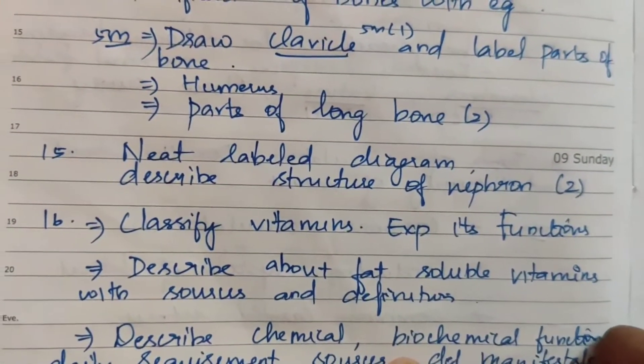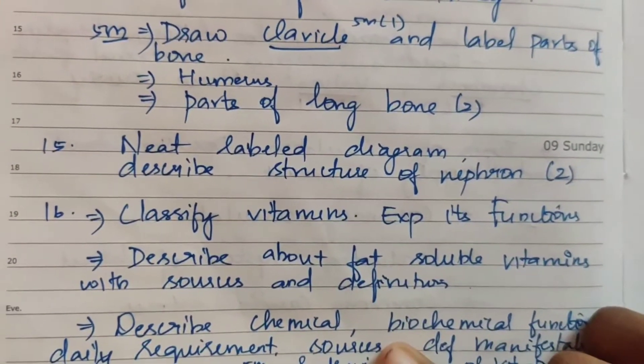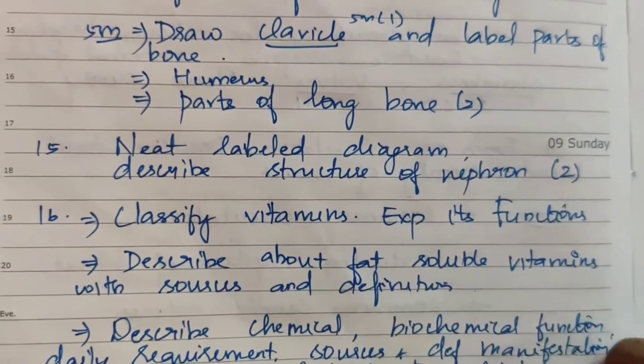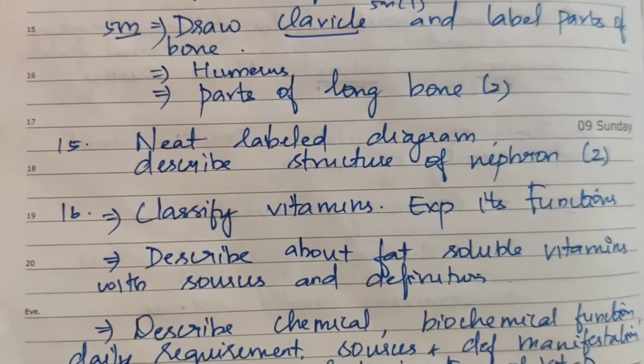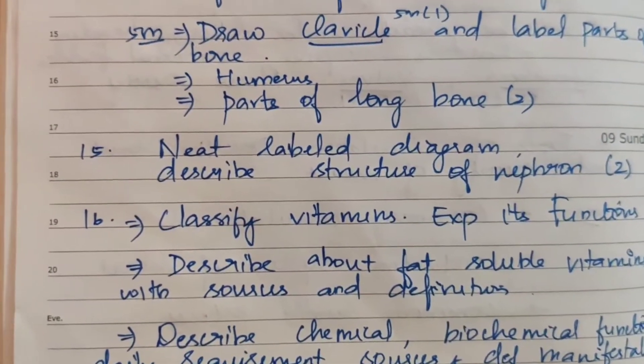The 15th topic: neat labeled diagram and describe the structure of a nephron — appearing 2 times as a 15-mark question.